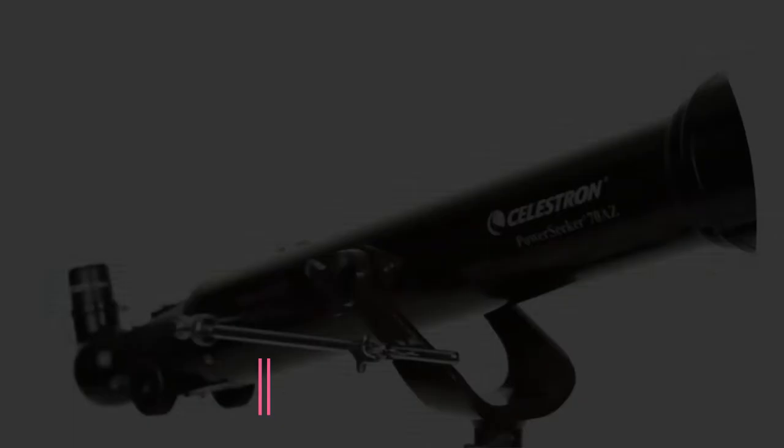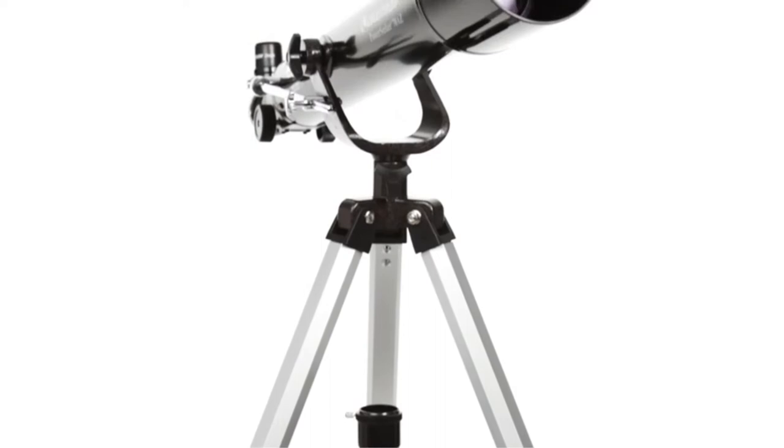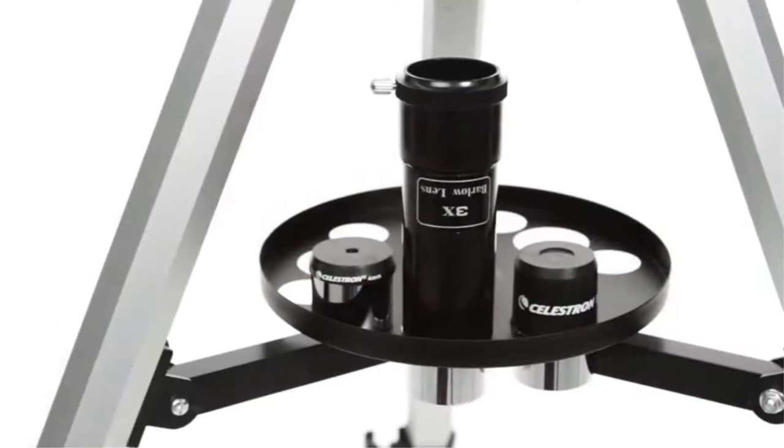Starting at number one: Celestron PowerSeeker 70 EQ Telescope. When you're looking for a kid's telescope, it is a good idea to always go for one which is easy to set up. In addition to that, you have to look at the magnifying power of each telescope before making such a decision.